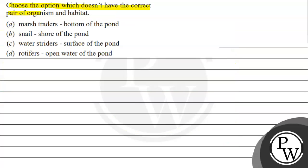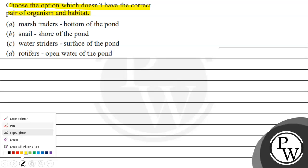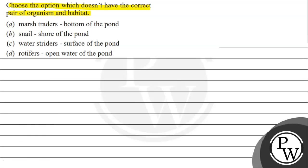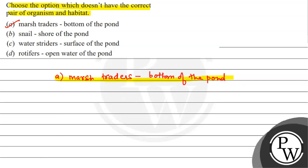So, option A — marsh traders, which is stated to be at the bottom of the pond — is the wrong answer. According to the passage, marsh traders are found at the surface, not the bottom of the pond. I hope you understood it well, best of luck.